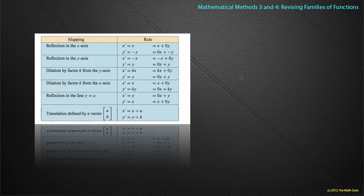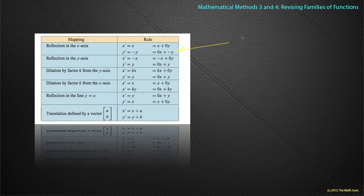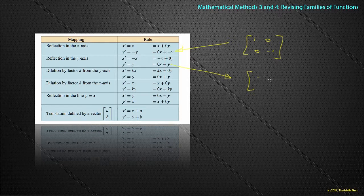On page 105 of your textbook is possibly the most important reference. What they're showing is that a reflection in the x-axis can be written by the matrix [1, 0; 0, -1], and a reflection in the y-axis can be written by [-1, 0; 0, 1]. My advice is to look at page 105 in the textbook and just have that information to hand, as it is quite useful. The start examples on using matrices are quite trivial.